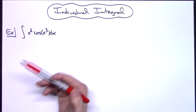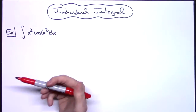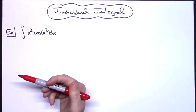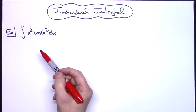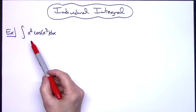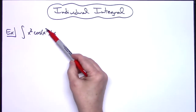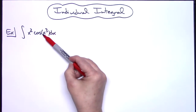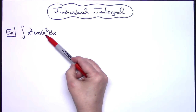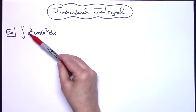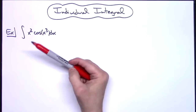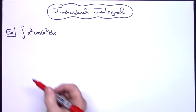Think ahead and see if you can find something that when you take the derivative of it, it will cross out with something already in the problem. A lot of times it'll be the inside portion of a composite function. Here, x to the third — when I take the derivative, that's going to be 3x squared. I already have an x squared in the problem, so it's going to cross out, and that's what we want.